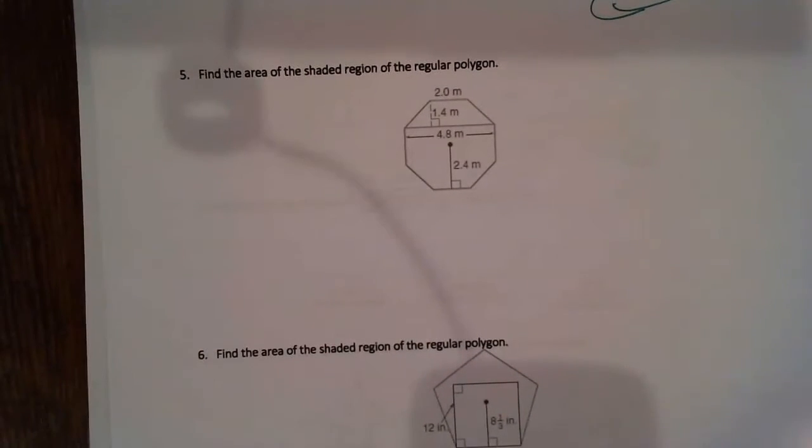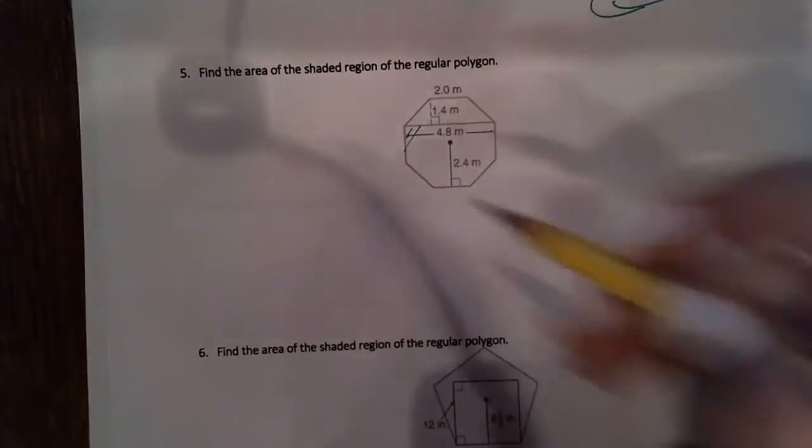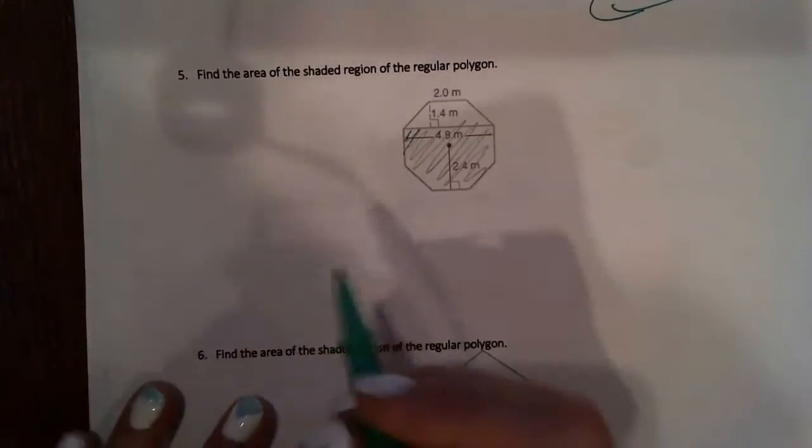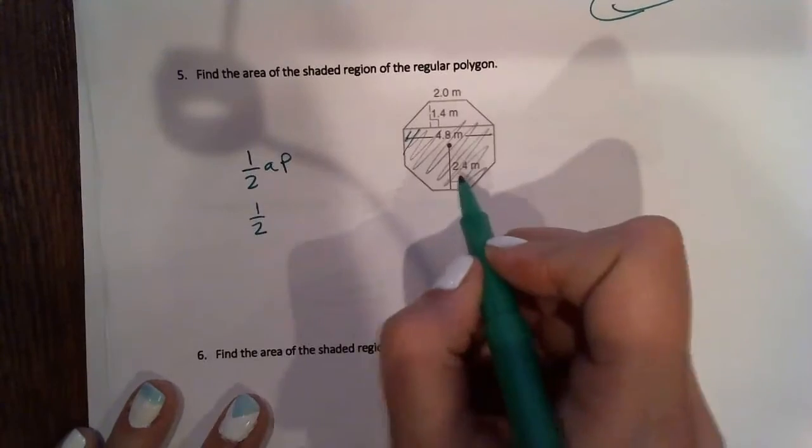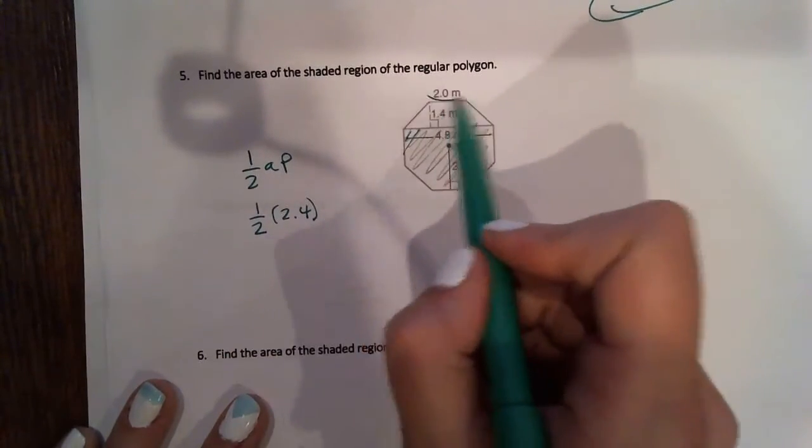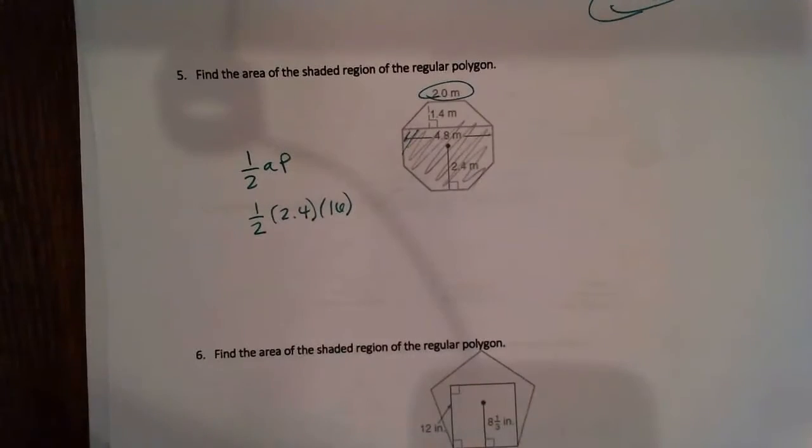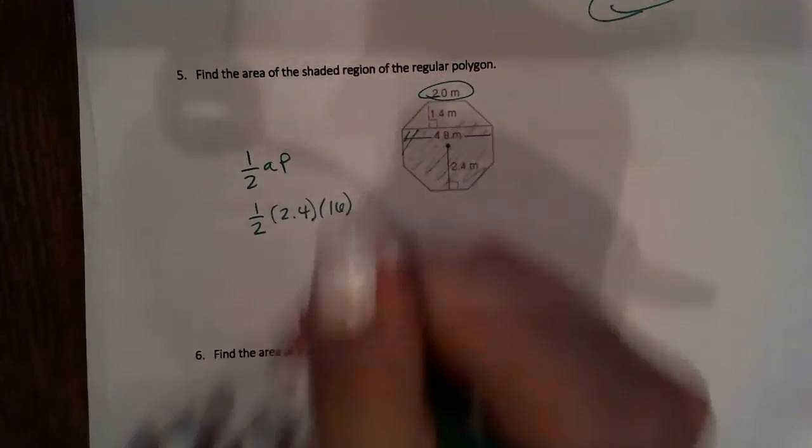Find the area of the shaded region of the regular polygon. None of this is shaded, so I'm not really sure what it wants us to find. Let's just say this is our shaded region. We're going to find the area for this whole shape, and then we'll find the area from this shape, and subtract the 2. We have 1 half apothem perimeter. 1 half, my apothem is 2.4. My perimeter, 2 times 8, this is an 8-sided figure, my perimeter is 16. I get 19.2 for the whole shape.